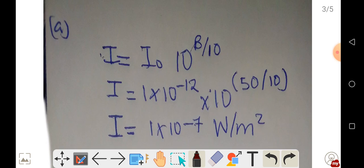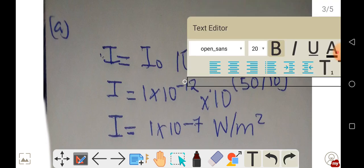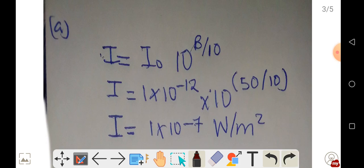In our question, the intensity level given is 50. This is what we have substituted here. When you punch this into your calculator, you get the intensity to be 1 times 10 to the power negative 7 watts per meter squared. That's the intensity.